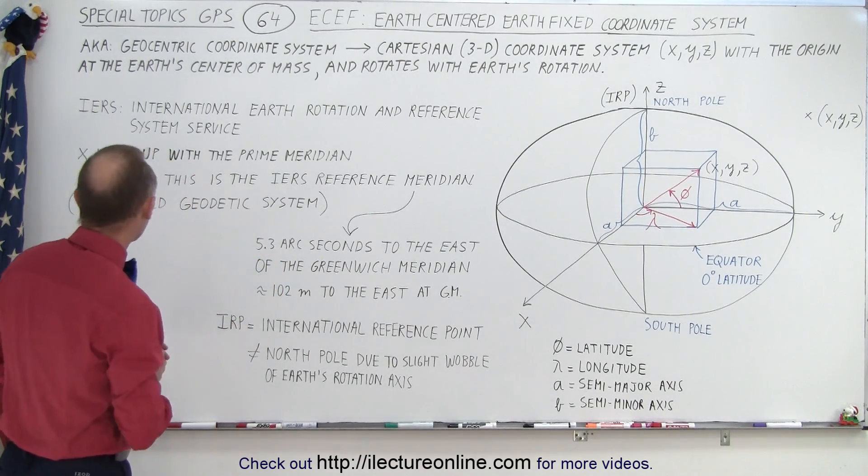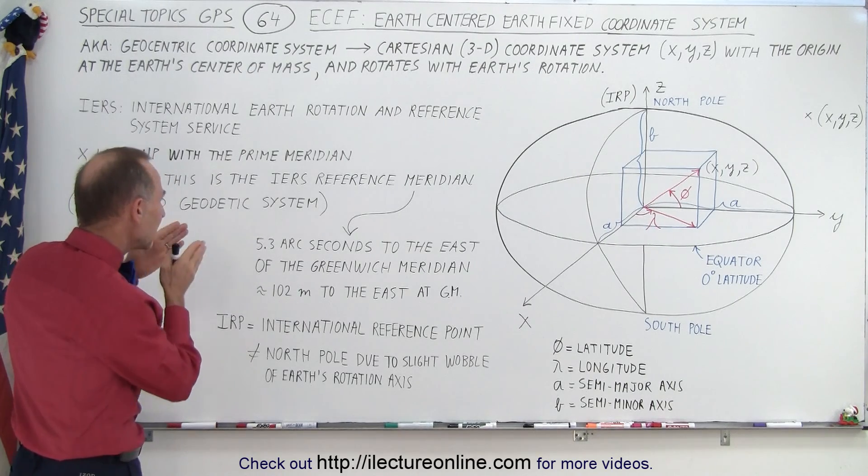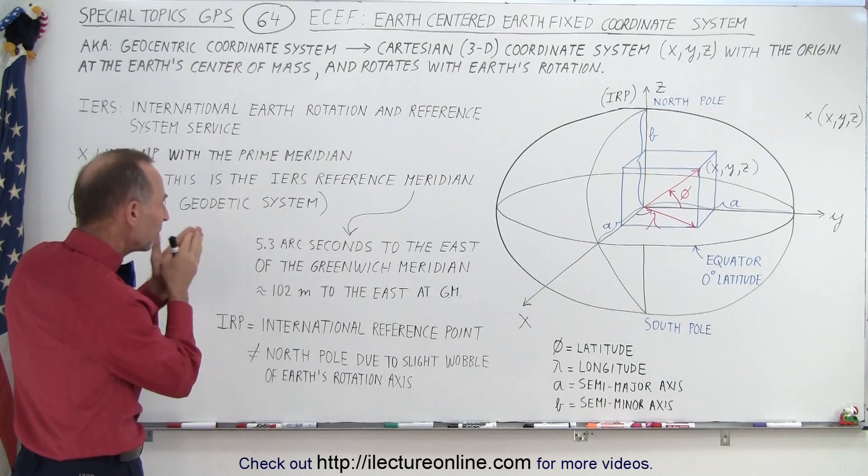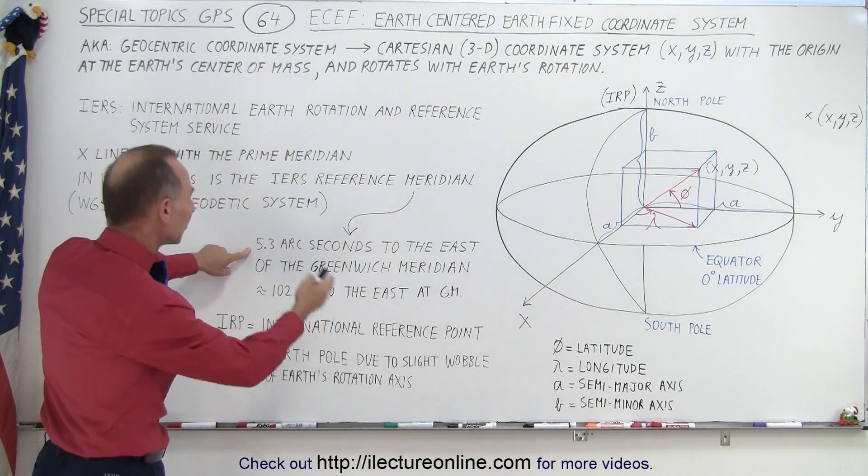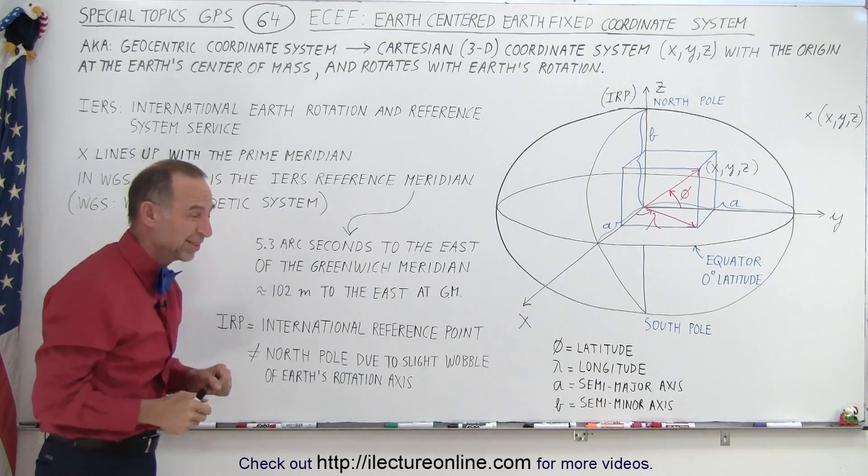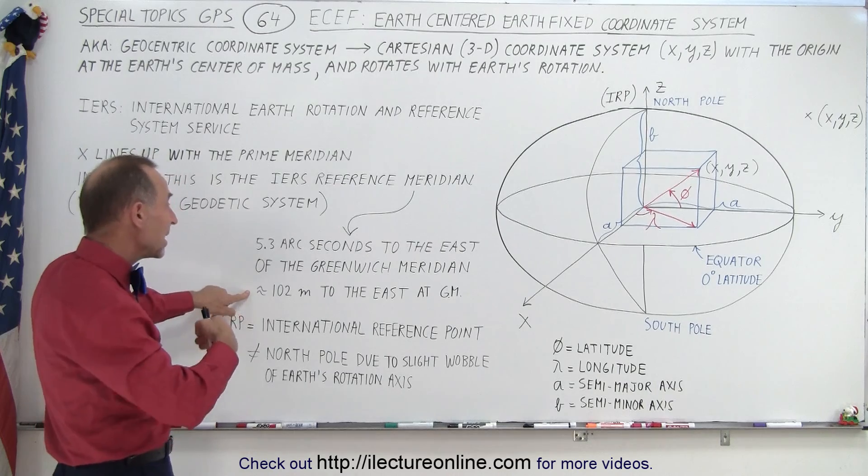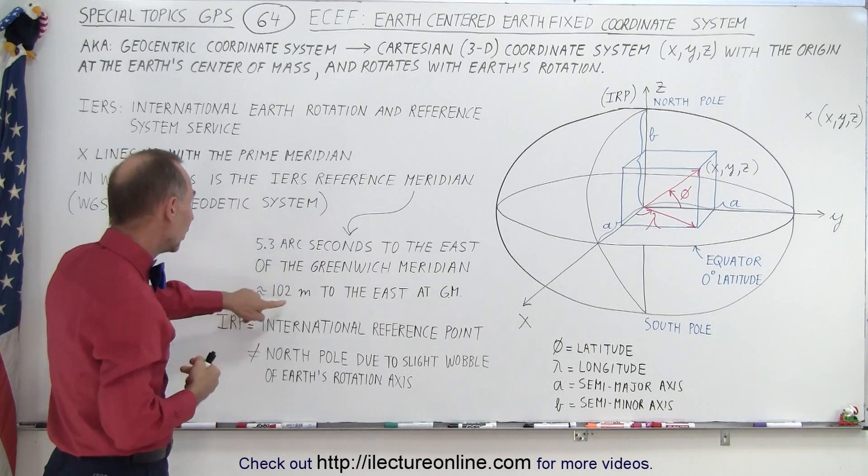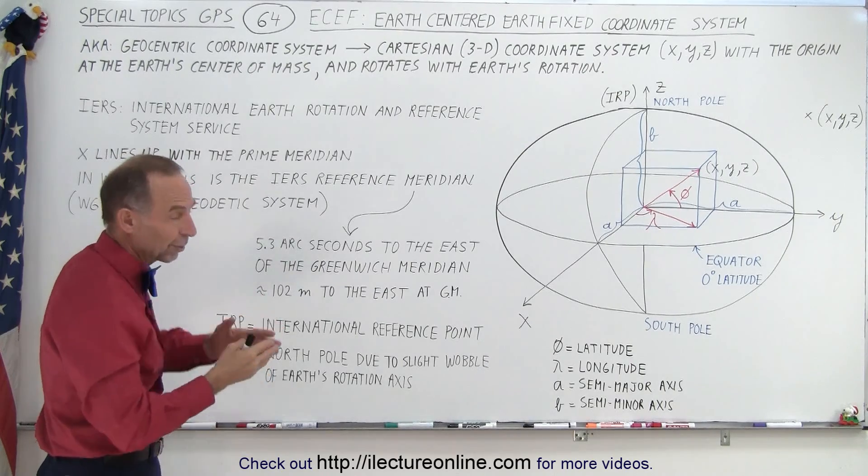We have now what we call a new world geodetic system, and based upon that, the prime meridian, the reference meridian, is now 5.3 arc seconds to the east of the Greenwich meridian. Doesn't sound like much but we do need to keep track of that.